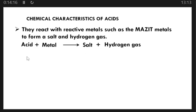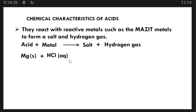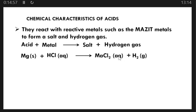For example, magnesium (solid) plus hydrochloric acid (aqueous) react to form magnesium chloride (aqueous) plus hydrogen gas (H₂). This equation needs to be balanced — you can add a 2 in front of HCl to balance it, giving: Mg(s) + 2HCl(aq) → MgCl₂(aq) + H₂(g).